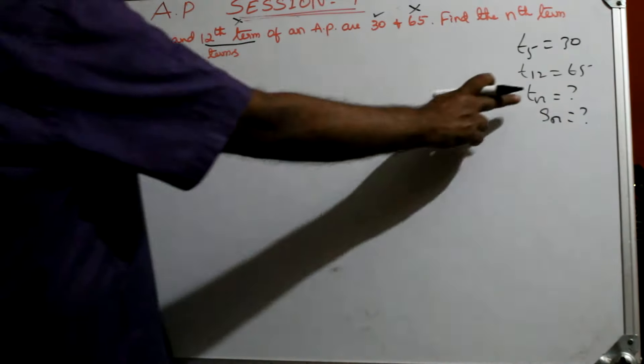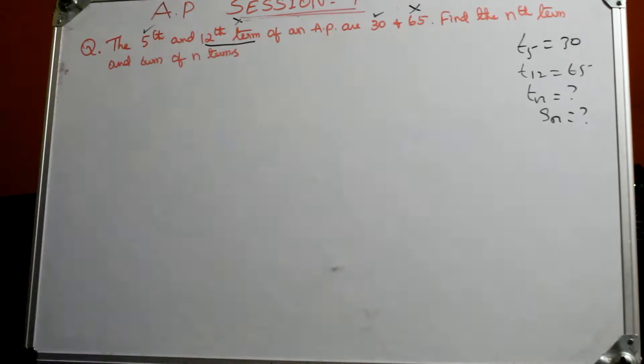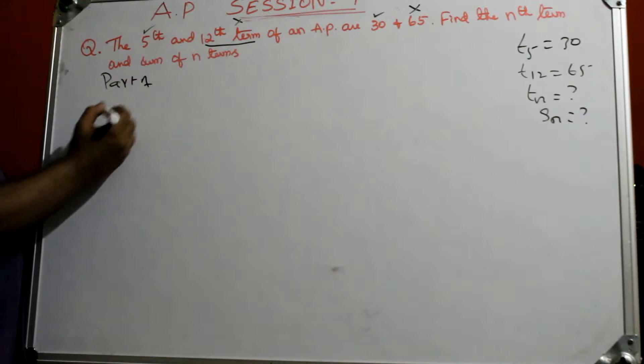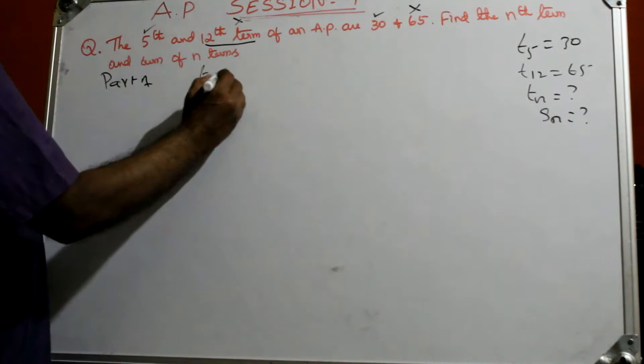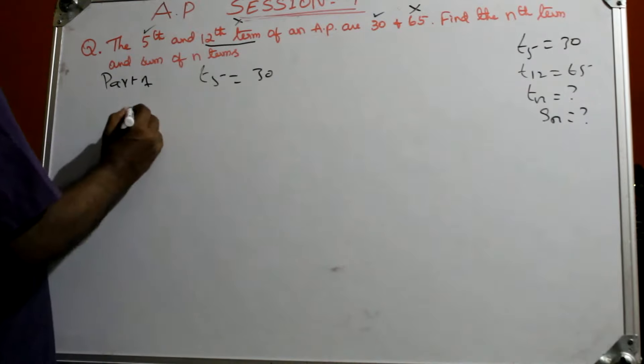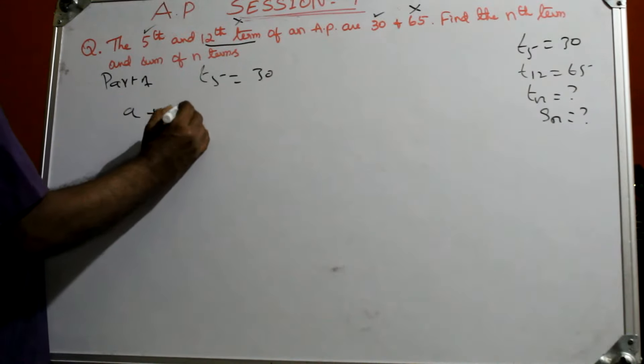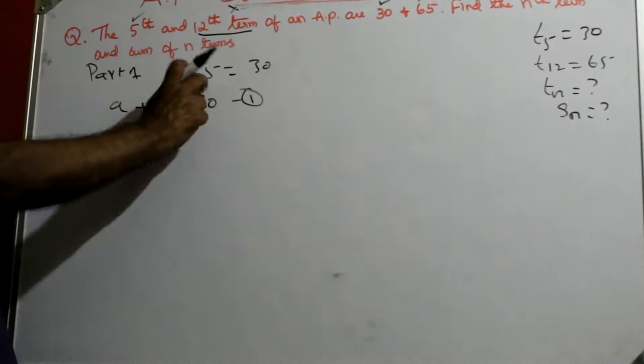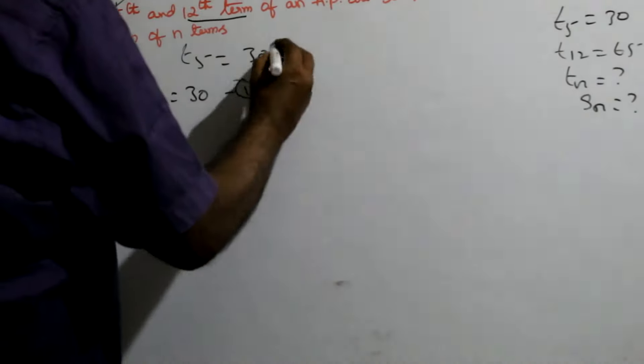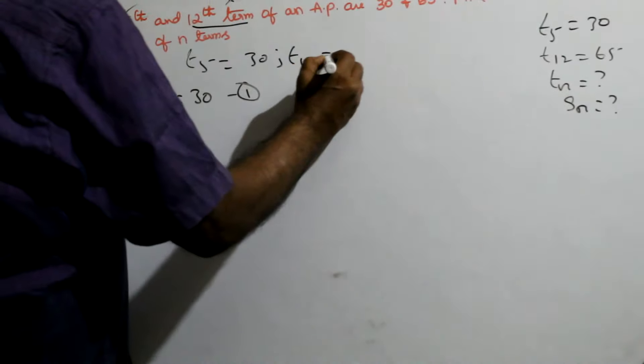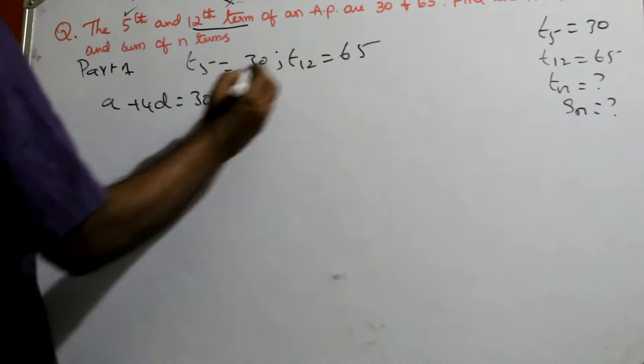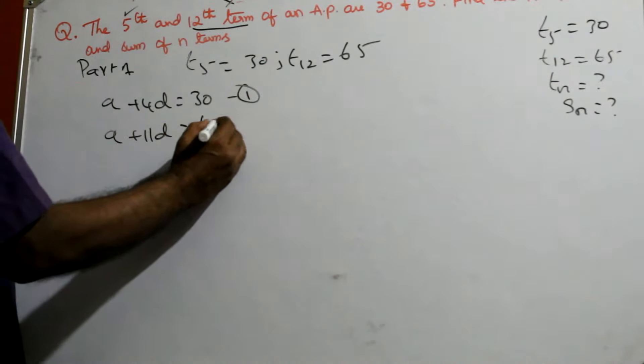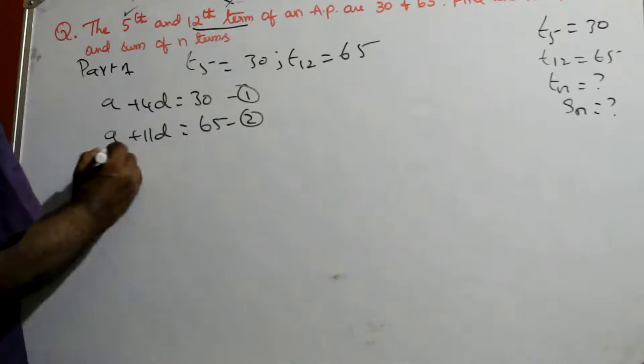So both are general answers. You won't get numbers. Tn and Sn. Now look here. Part 1 is given. T5 is equal to 30. I told you when T5 means nothing but A plus 4d equal to 30. Equation number 1. You must write T5 as A plus 4d. T12 is how much? 65. T12 means A plus, 1 number you must reduce, 11d is equal to 65. Equation number 2.